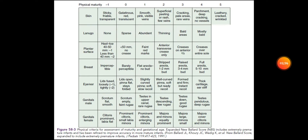The second parameter is lanugo. None carries negative one point. Sparse carries zero points. Abundant carries one point. Thinning carries two points. Bald areas carries three points. Mostly bald carries four points.